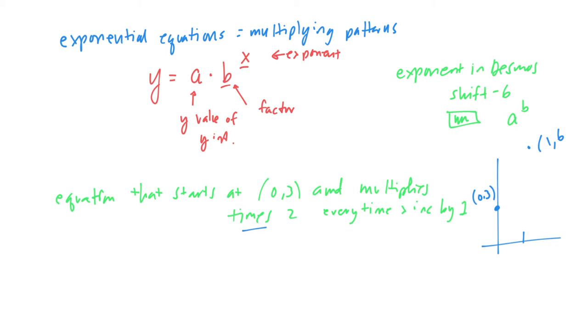The next point is going to be at two, we're going to go over one, we multiply times two again, and so this would be two comma twelve. And so we're going to get this exponential graph that looks something like that.